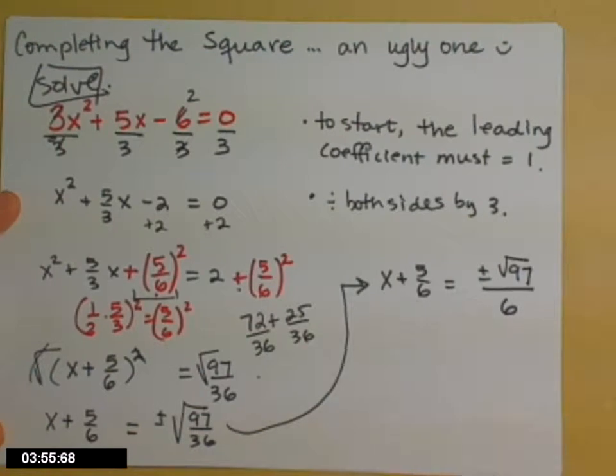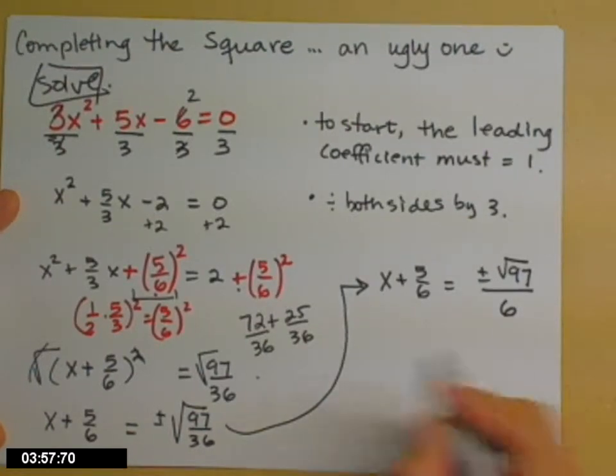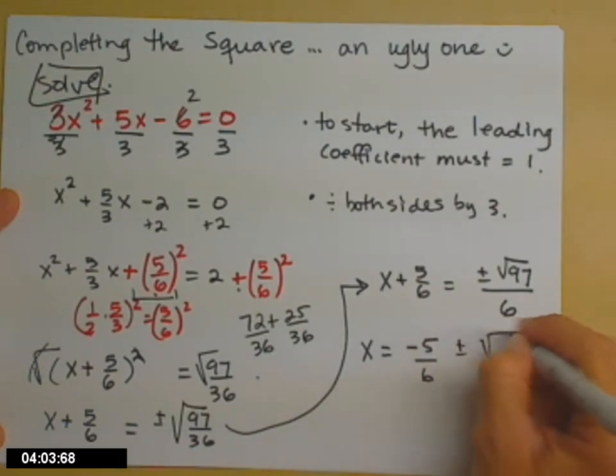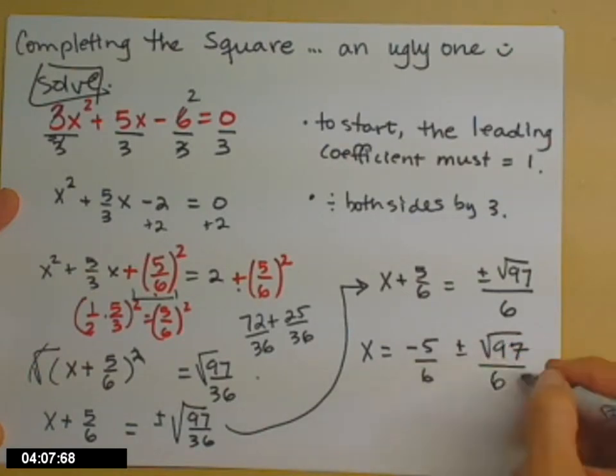And then final step to get x by itself would be to subtract 5 sixths from both sides. So negative 5 over 6 plus or minus the square root of 97 over 6. Notice my 6 didn't sneak under that radical. Don't let it under.